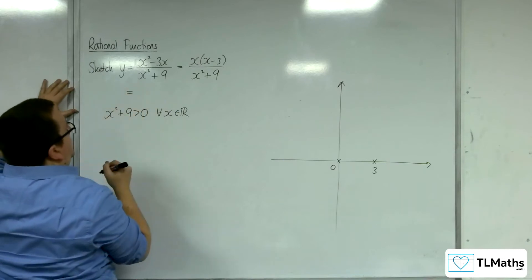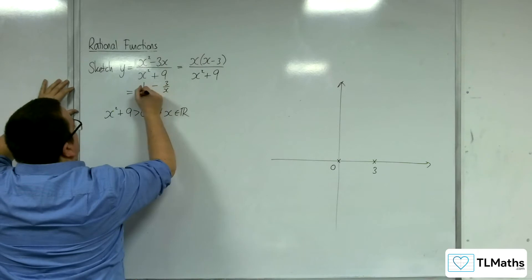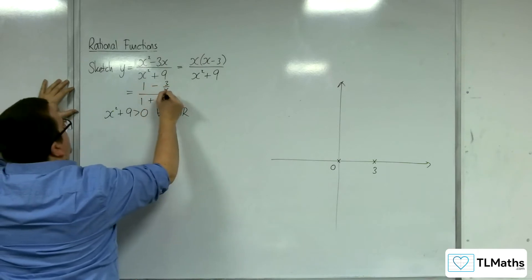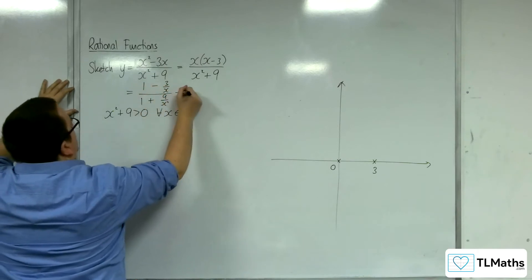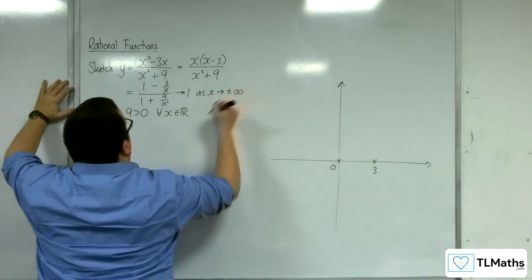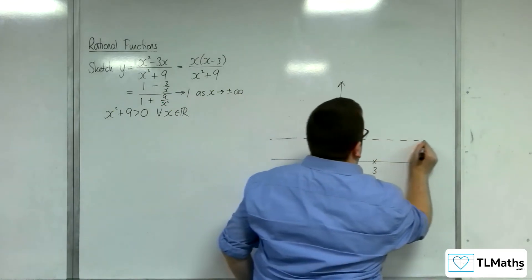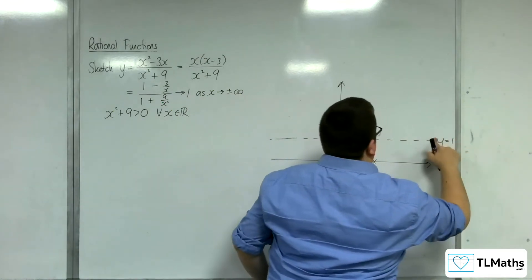So dividing top and bottom by x², we're going to get (1 - 3/x) over (1 + 9/x²). So that's going to be tending to 1 as x tends to positive or negative infinity. So y = 1 is a horizontal asymptote.